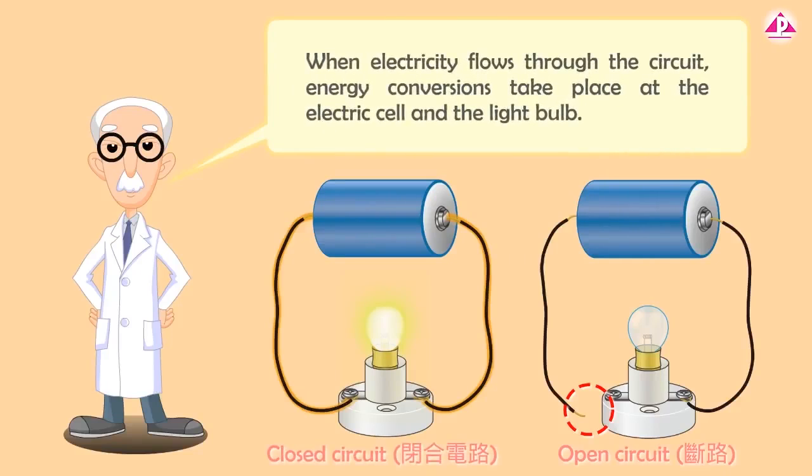When electricity flows through the circuit, energy conversions take place at the electric cell and the light bulb.